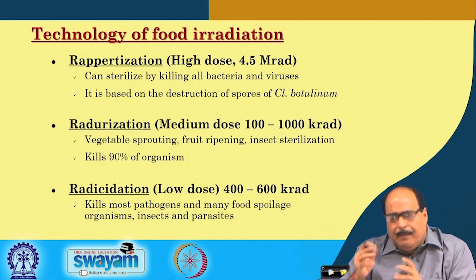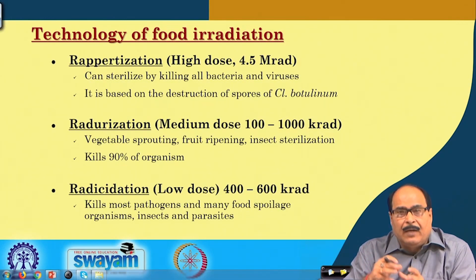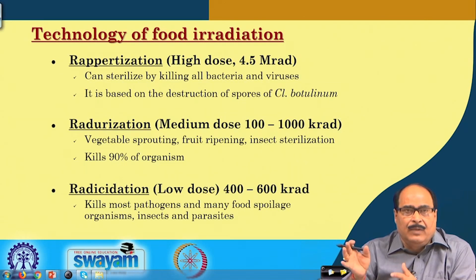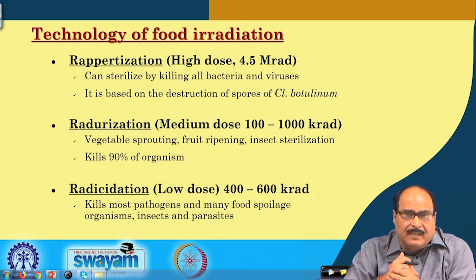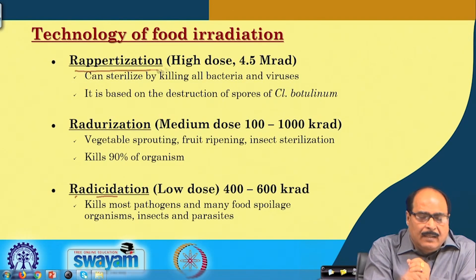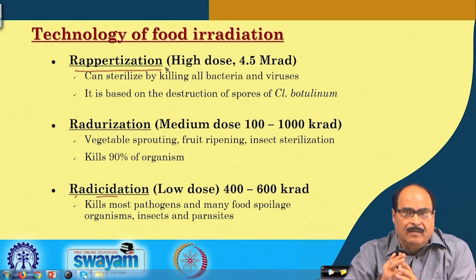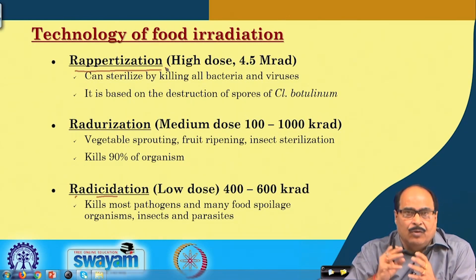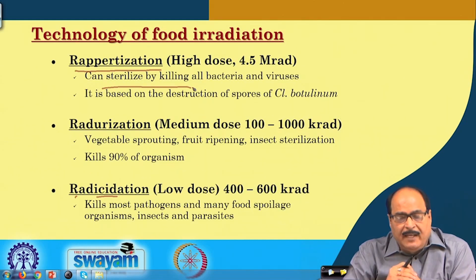Different dosages are applied depending on the requirement and objective of the process, and accordingly the processes are given different names — similar to thermal processing where we have pasteurization, sterilization, or blanching. In radiation processing we have radappertization, radurization, and radicidation. Radappertization is radiation sterilization — complete removal of microorganisms or biological causative agents. This process needs a higher dose, around 4.5 million rad or more, to sterilize the food by killing bacteria, viruses, and other agents.